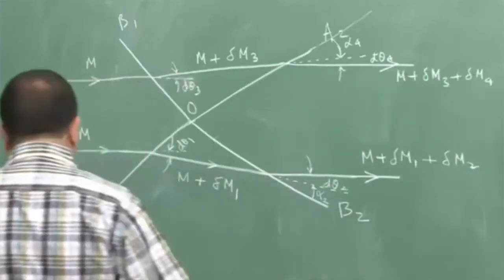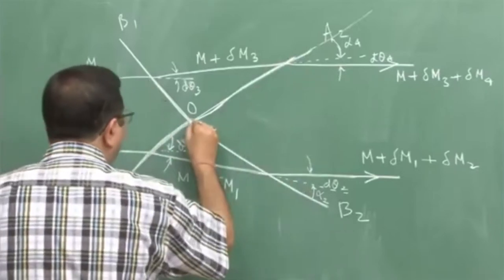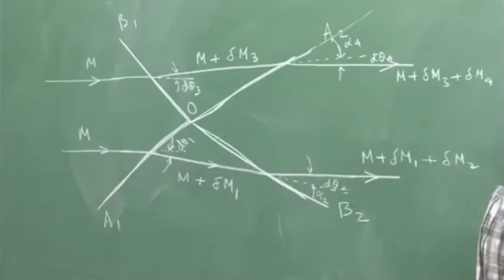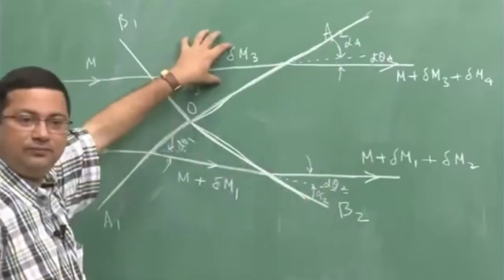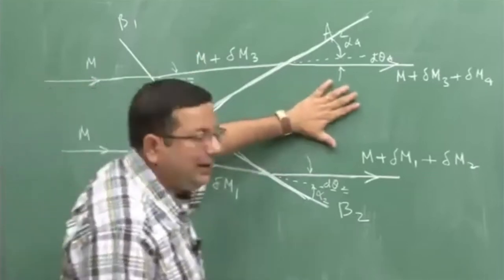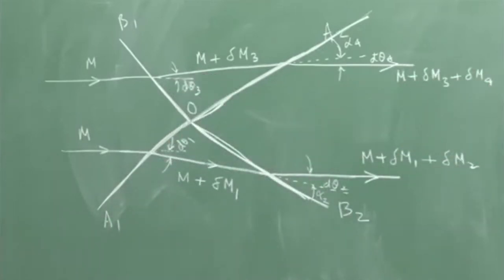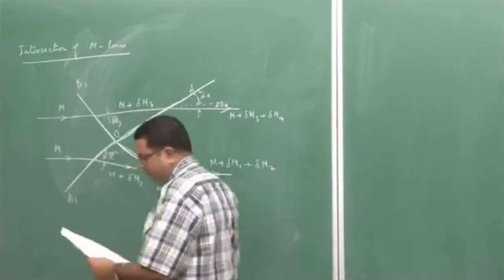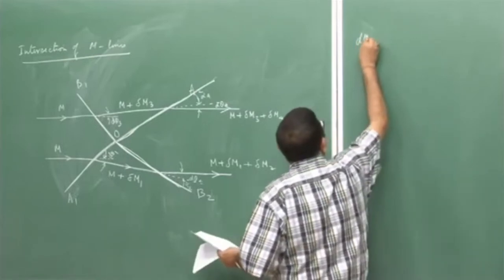Now, if we know the flow in the region B1OA1 as well as in region A1OB2, then we can determine the flow in the region downstream also. That is the point — if we know the change that is occurring to the flow, we can get what the conditions will be here. The deflection of the streamlines occurring in OA2 and OB2 are not arbitrary — they are actually determined by the flow conditions.